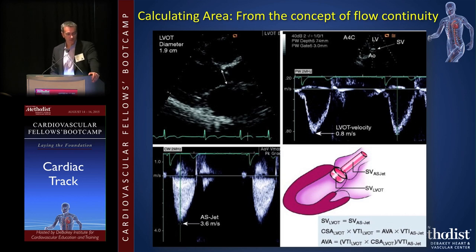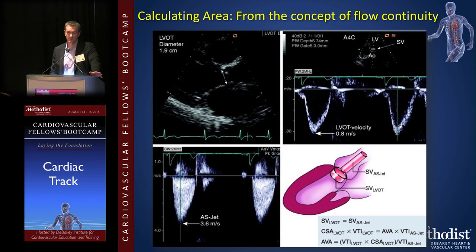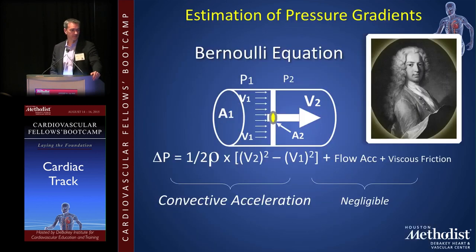The continuity equation is simple: if you know the stroke volume on one side of a lesion, it must equal the stroke volume on the other side. You know most parameters — the LVOT area and velocity, and the velocity across the stenosis — but the unknown is the valve area. You solve for it. Flow on one side equals flow on the other side; solve for the unknown area. That's the basic principle of the continuity equation.